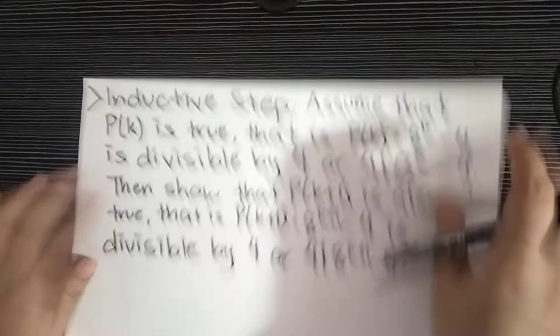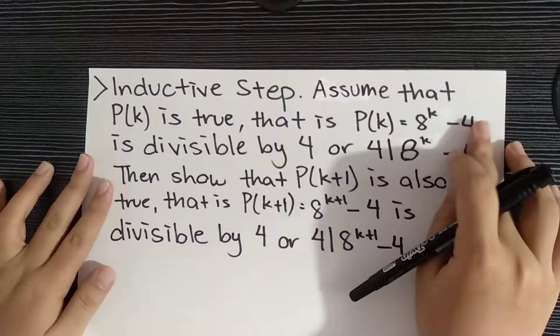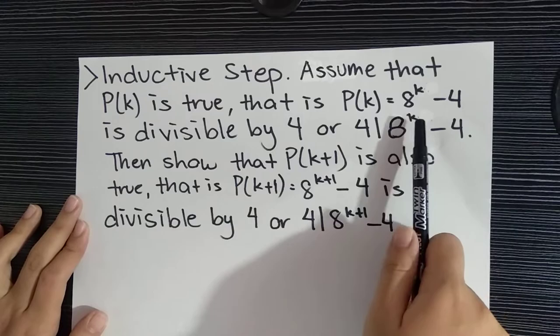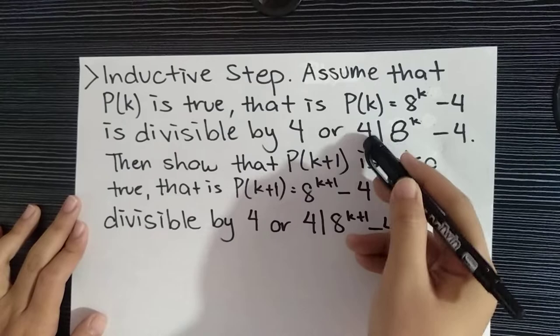Now let's move on to the next step, which is the inductive step. Let's assume that n = k. Assume that P(k) is true. That is, P(k) equals 8^k - 4 is divisible by 4, or 4 | 8^k - 4.